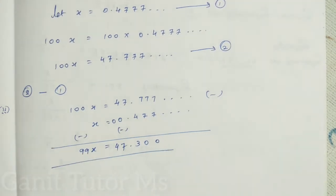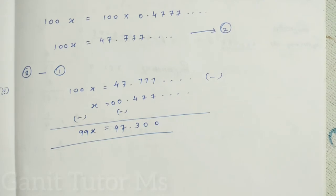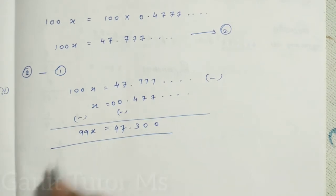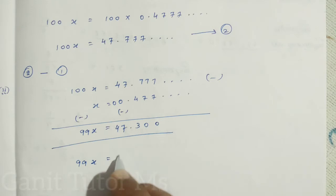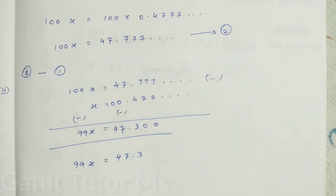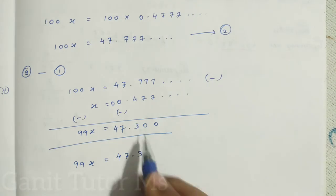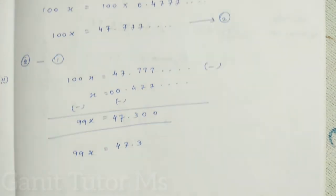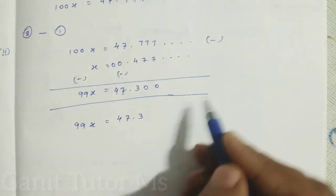So we get 99X equal to 47.300. Clear? Any doubt? So next, 99X is equal to 47.3. So after the decimal, after the 0 will come, after decimal point 0 will be there, it is not valid, right? It is not a value. It is not valid.